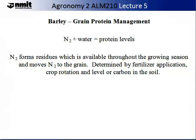Growing protein can be managed in your crop by two major inputs: nitrogen and water. Nitrogen forms residues which are available throughout the growing season and the plant moves the nitrogen from the soil into the grain. The amount of nitrogen available is a consequence of the fertiliser application, the crop rotation and the soil carbon level. Varieties can also differ in their ability to transfer nitrogen from the straw into the grain during grain filling.